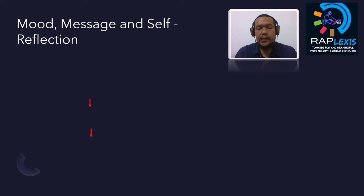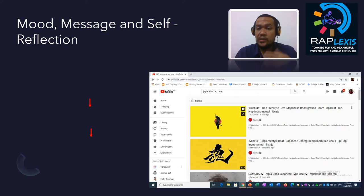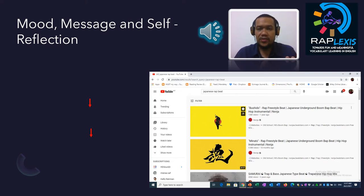After you have finished counting the bars and the beat, the next stage is to find the mood, message, and self-reflection when listening to the music. You can find the music from YouTube — just type what you like. For example, if you like Japanese rap beat, there are plenty of selections you can find. Choose it and let the students listen, then try to find what feeling or emotion is associated with the music.